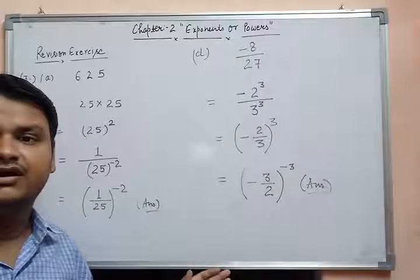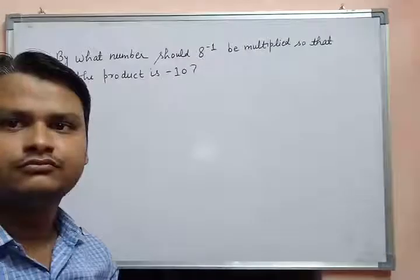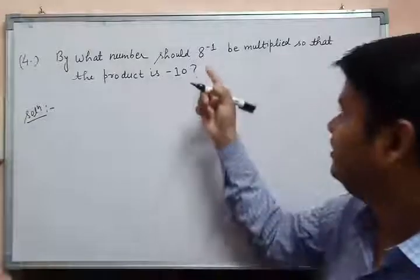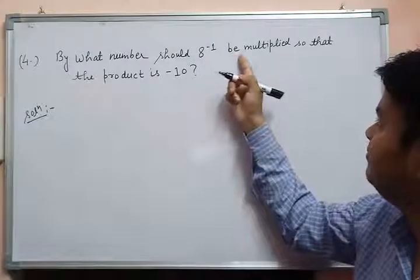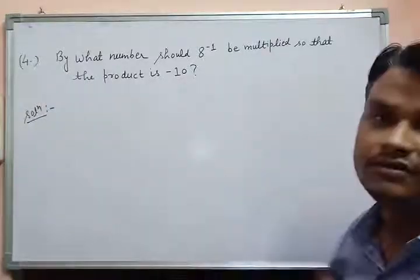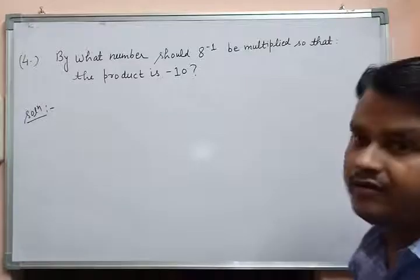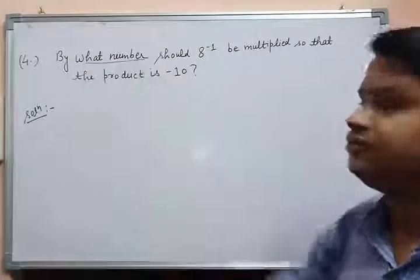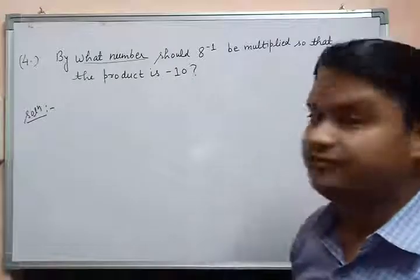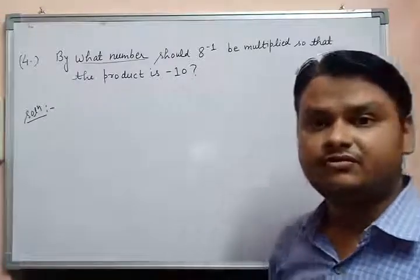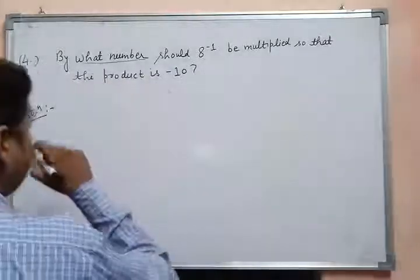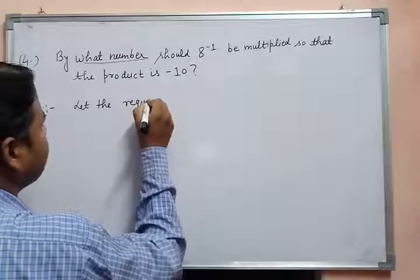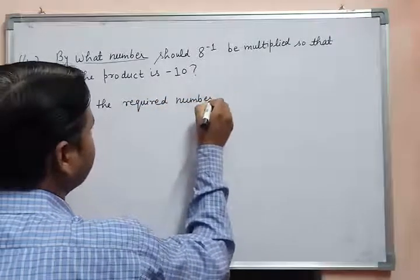Pause the video to note it down in your copy. Now moving on to question number 4, which says: by what number should A inverse, or A to the power minus 1, be multiplied so that the product is minus 10? This is a find-the-unknown-number problem. In this type of question, we assume a variable. Let the required number be x.